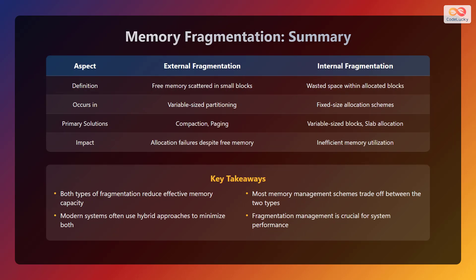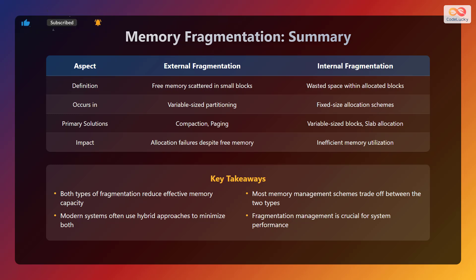Let's summarize what we have learned about memory fragmentation. External fragmentation is free memory scattered in small blocks, and it occurs in variable size partitioning. The primary solutions are compaction and paging. This results in allocation failures despite free memory. Internal fragmentation is wasted space within allocated blocks, and it occurs in fixed size allocation schemes. The primary solutions are variable size blocks and slab allocation. This leads to inefficient memory utilization. Hence, both types of fragmentation reduce effective memory capacity. Most memory management schemes trade off between the two types. Modern systems often use hybrid approaches to minimize both. Fragmentation management is crucial for system performance.